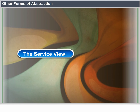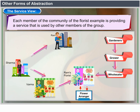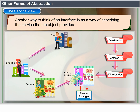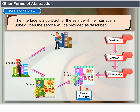The service view: Each member of the community — like the florist example — is providing a service used by other members of the group. Another way to think of an interface is as a way of describing the service that an object provides. The interface is a contract for the service: if the interface is appealed, then the service will be provided as described.